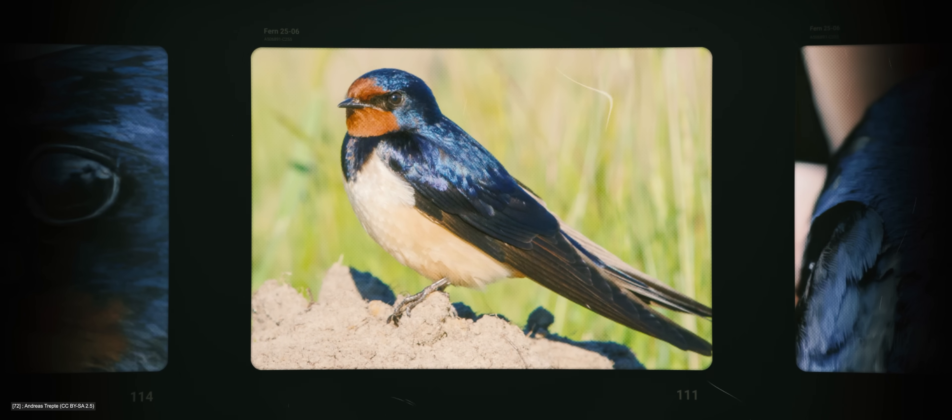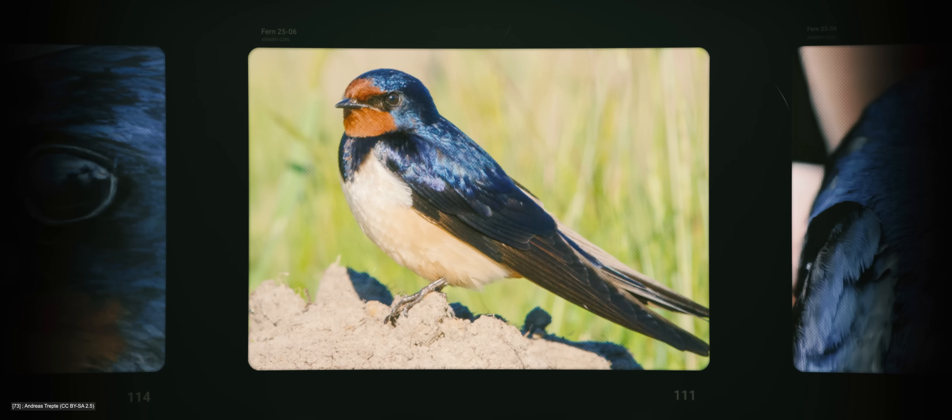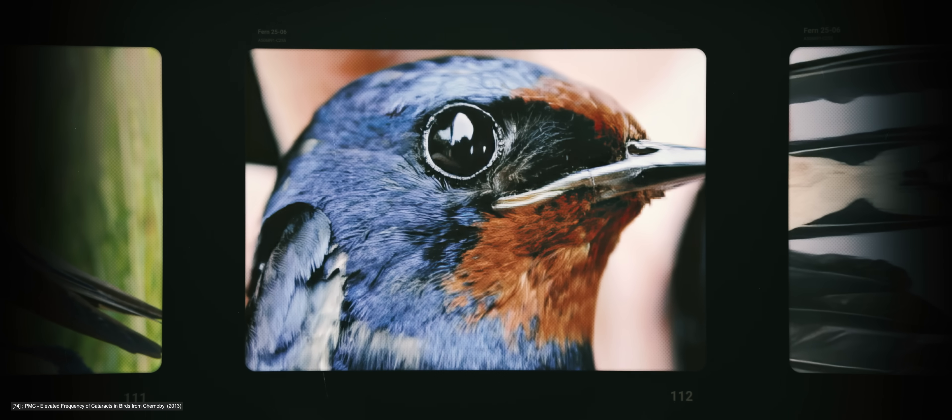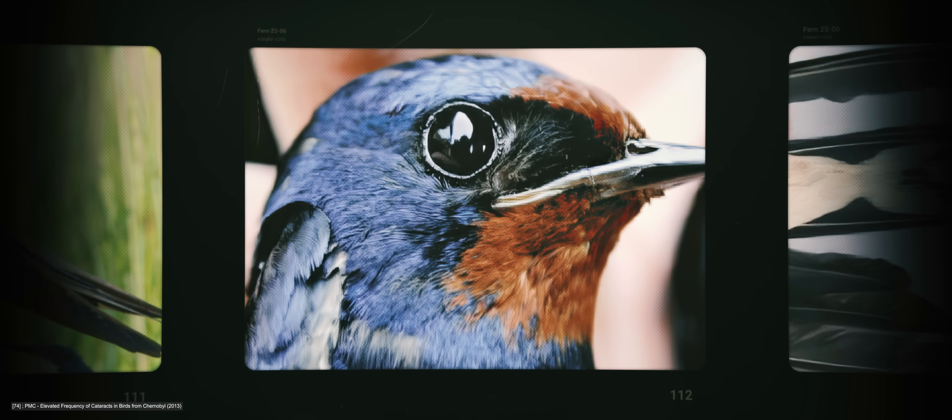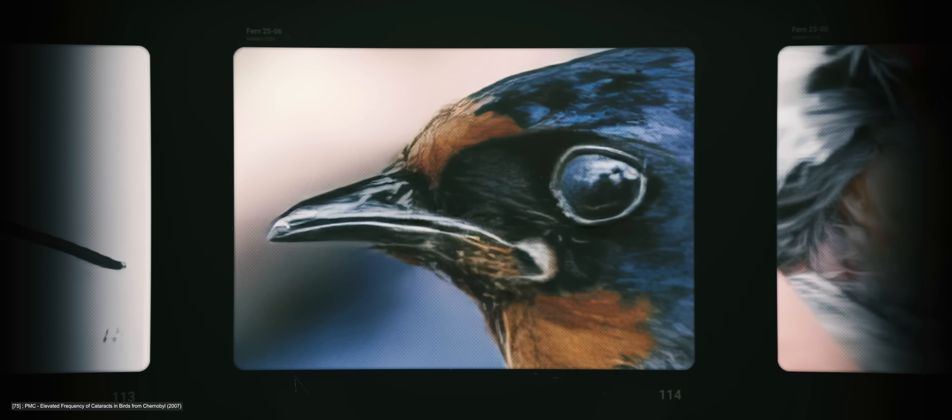This is what a barn swallow usually looks like. Note the distinctive combination of blue-black feathers and a red face. This one from Chernobyl has white patches on its face. Its tail feathers are crooked and its beak deformed, stuck slightly open. A lump protrudes beneath its plumage. A tumor.